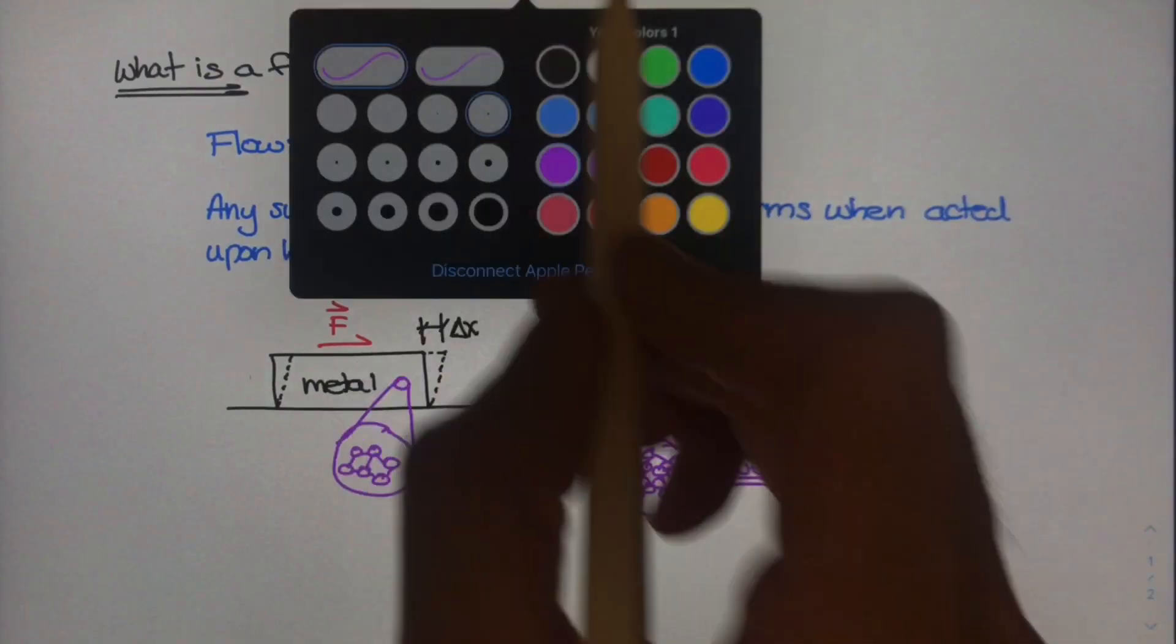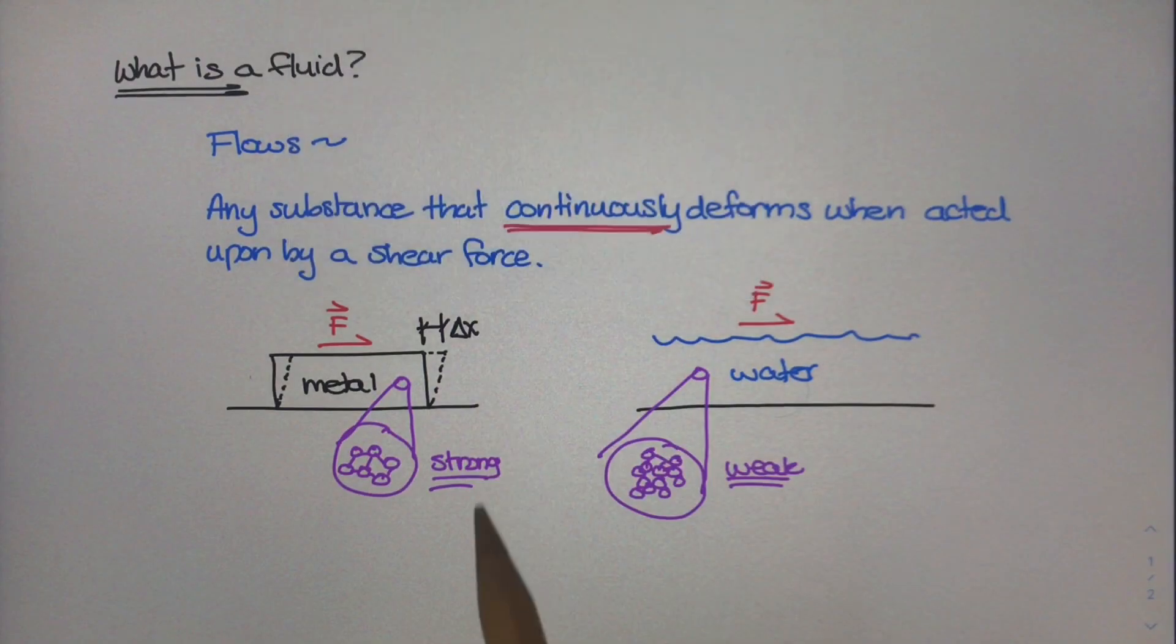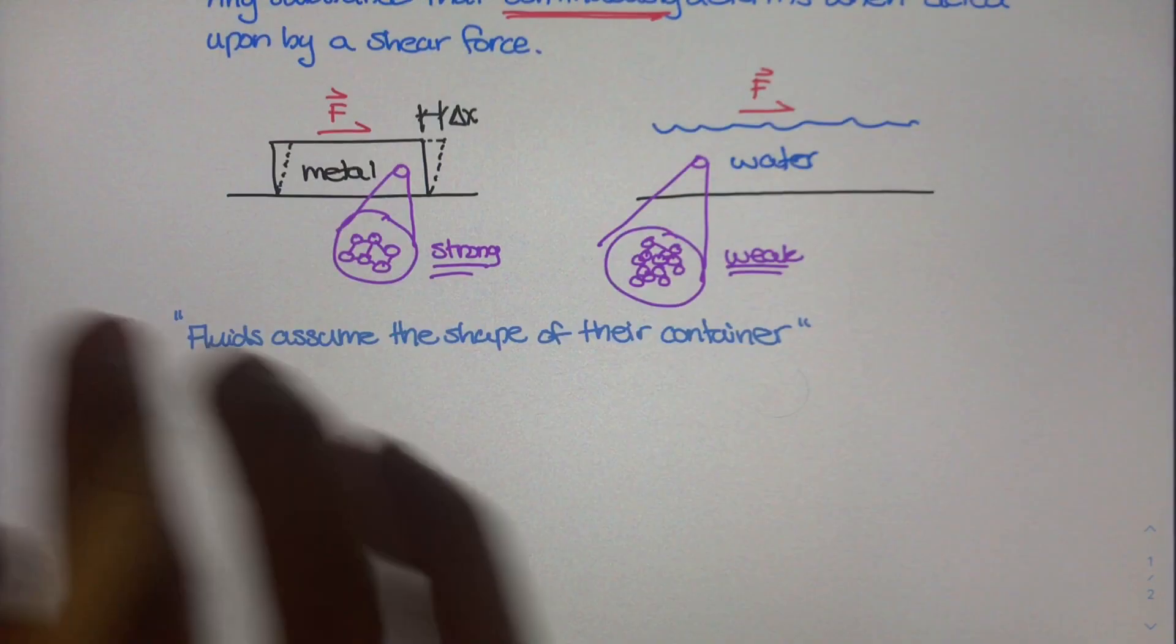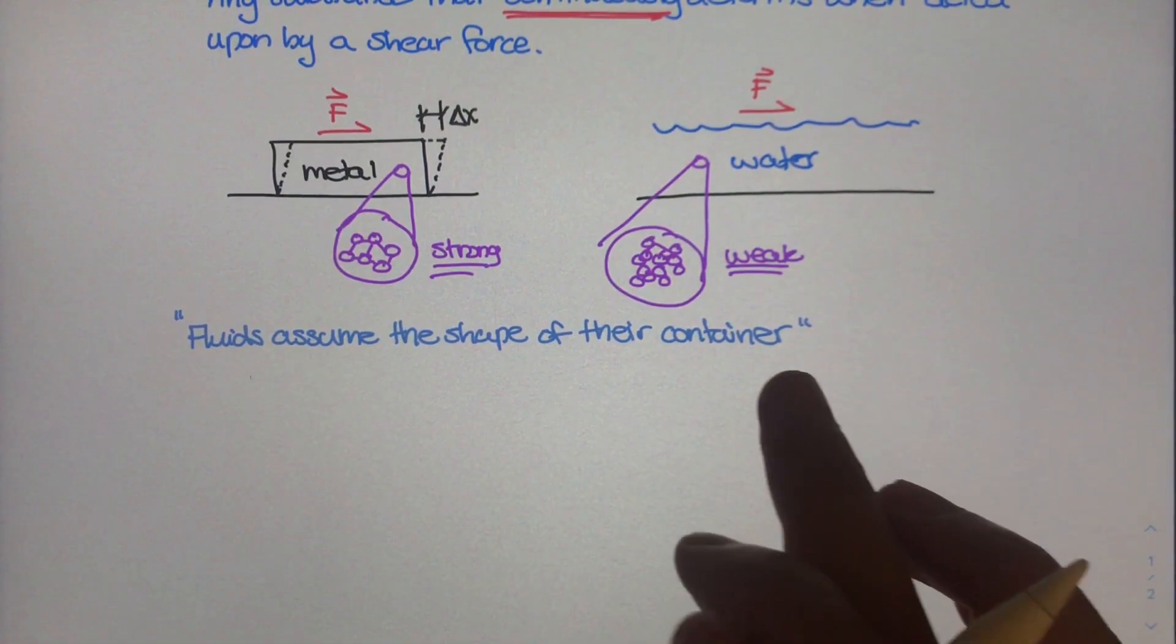But the question here is how do we actually classify fluids based on these molecular bonds and molecular behaviors? Well, you might have heard the definition: fluids assume the shape of their container.